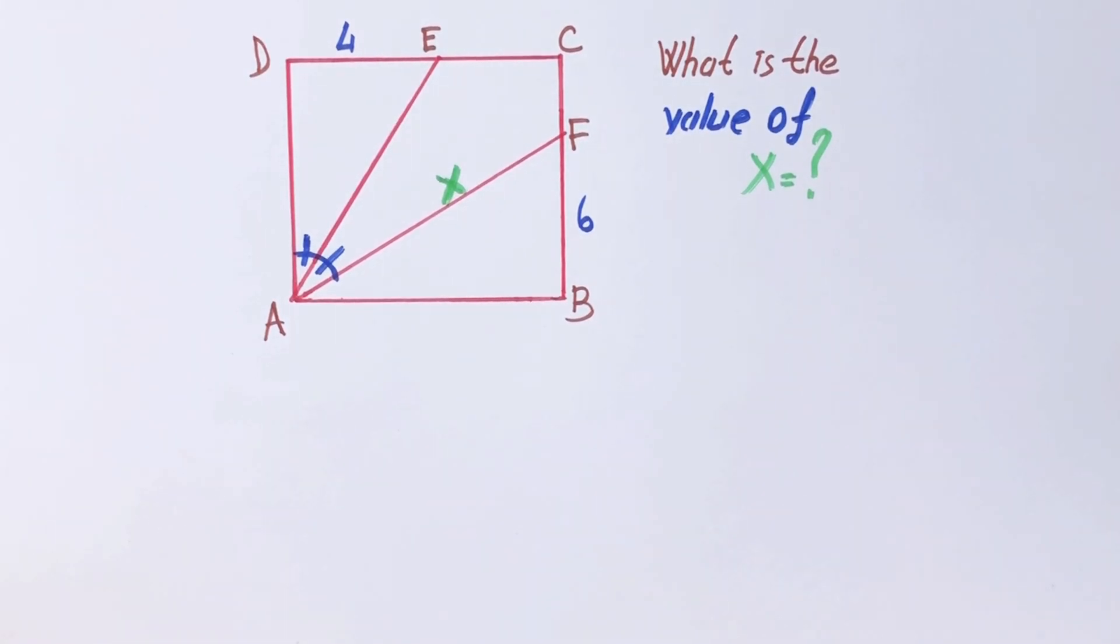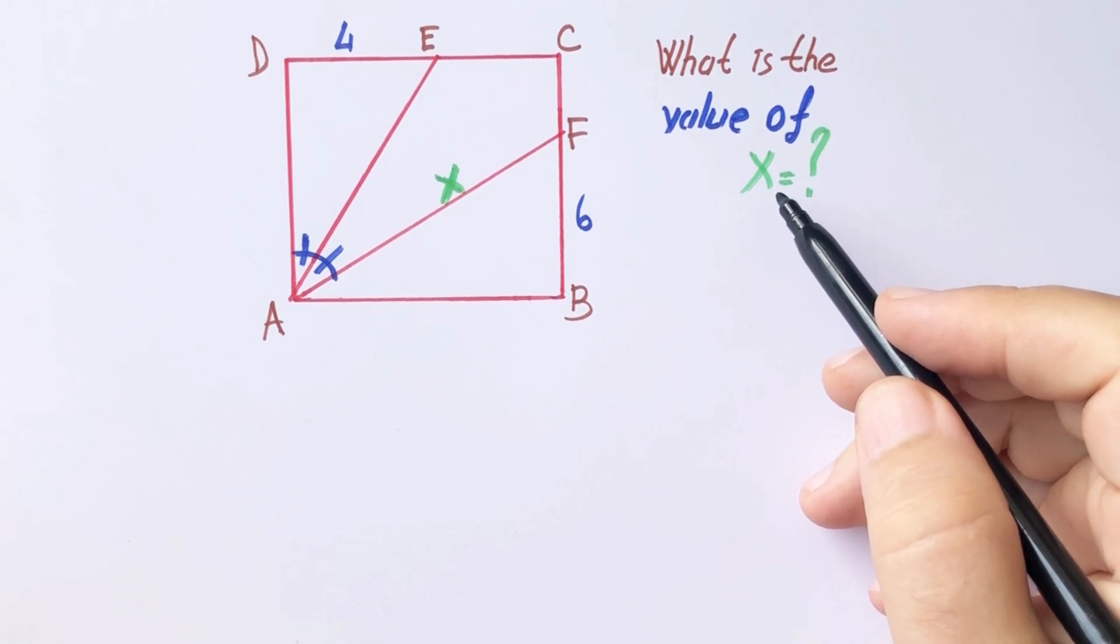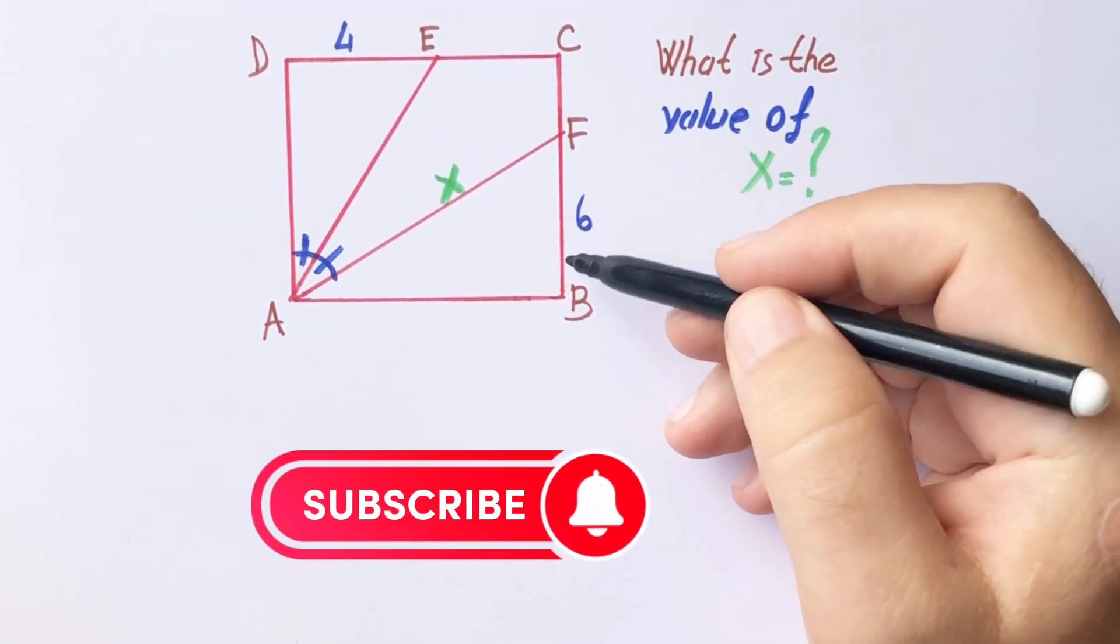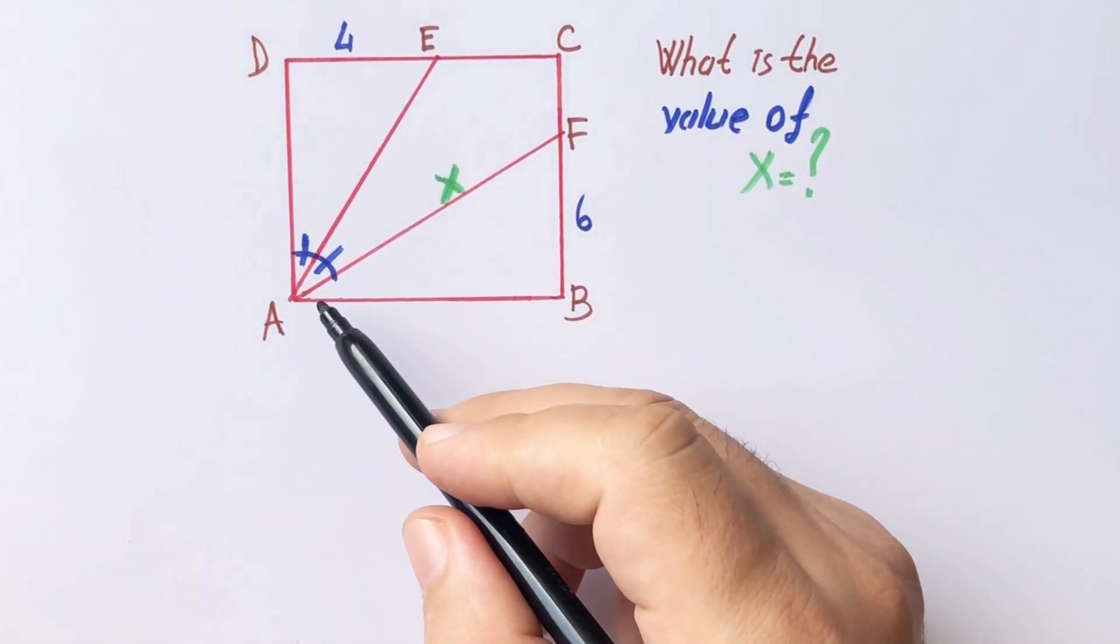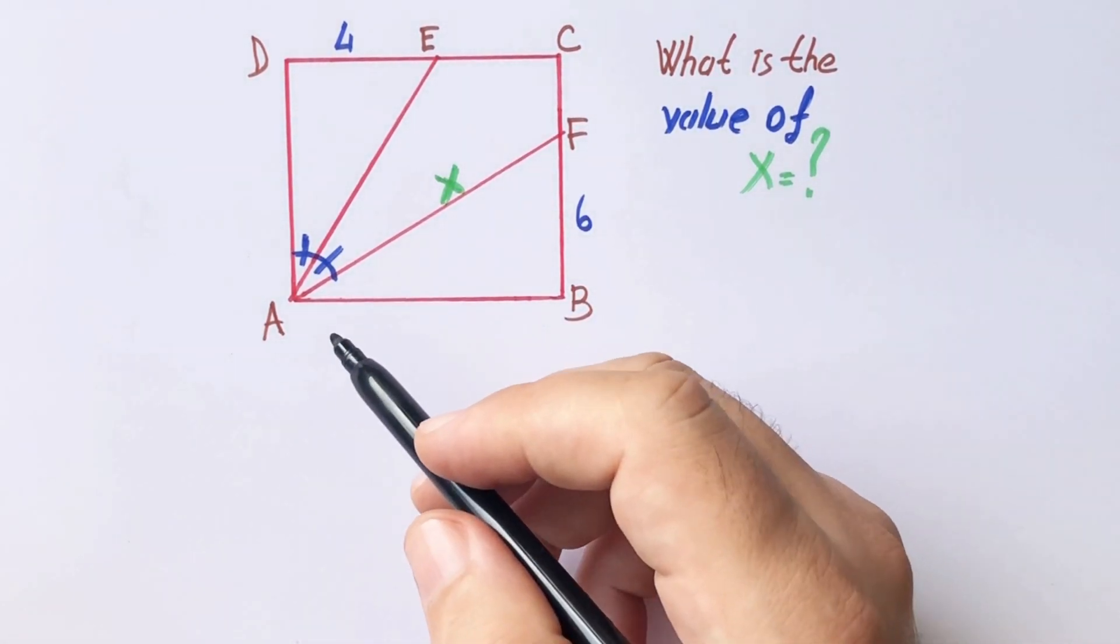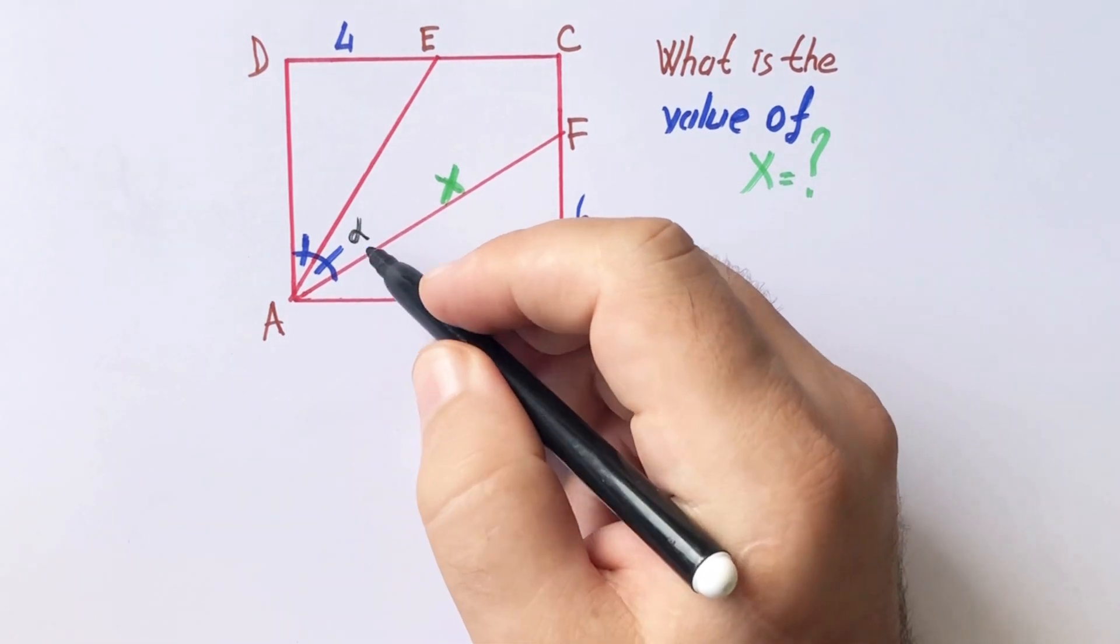Hello everyone, in this video we will calculate the value of x. This length is six units and here's four. X is asked. First of all, let's call these angles alpha.